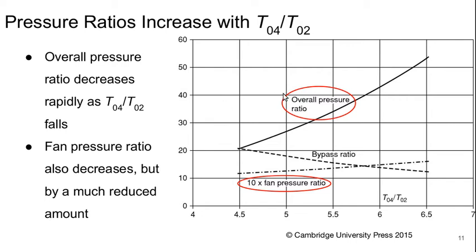The overall pressure ratio decreases pretty rapidly as T0.4 over T0.2 falls, and the fan pressure ratio also decreases by a whole lot less.